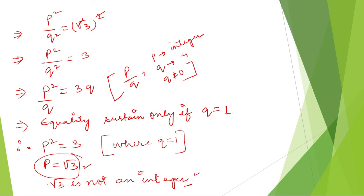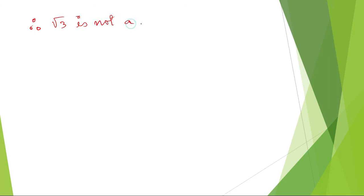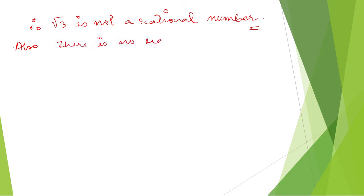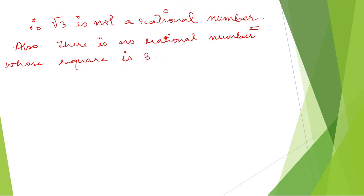So therefore our assumption is wrong. We assumed that root 3 is a rational number. Therefore we can conclude: root 3 is not a rational number, or equivalently, there is no rational number whose square is 3. Thank you so much, we'll meet in the next video.